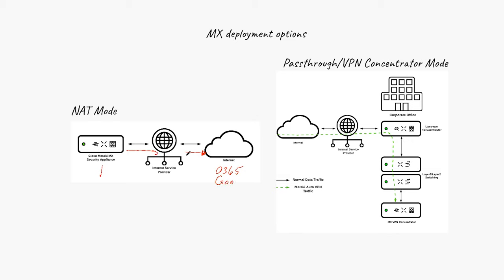It's going to go through the service provider. Your router is going to be here and give it internet access. So what is NAT mode? The MX is in that configuration, and let's say you have a switch in your branch with all the different devices.